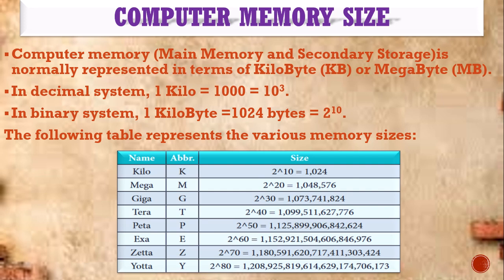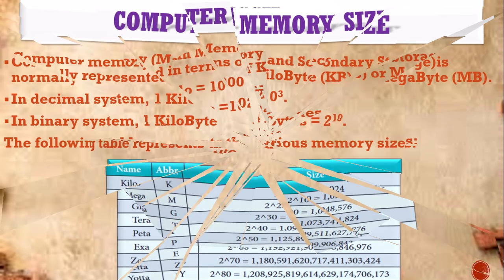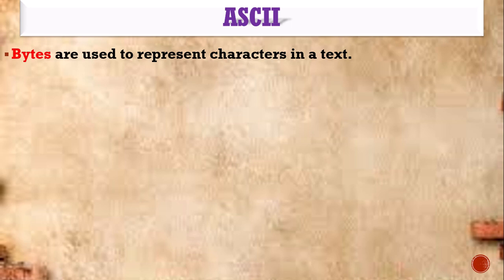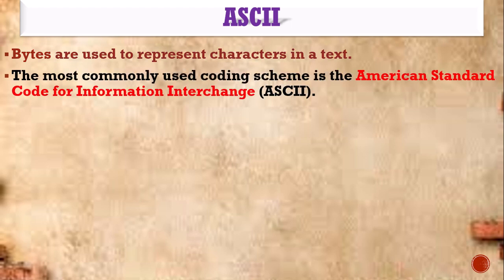Again, bit is nothing but 0 or 1, and 8 bits form 1 byte. 1024 bytes — on that basis we can store that much data in a particular device. ASCII bytes are used to represent characters in text. Each character can be represented in bytes; 8 bits form 1 byte. Bit is a binary digit. To represent any character or special character, many coding systems are used. One of the most commonly used coding systems is the ASCII code.